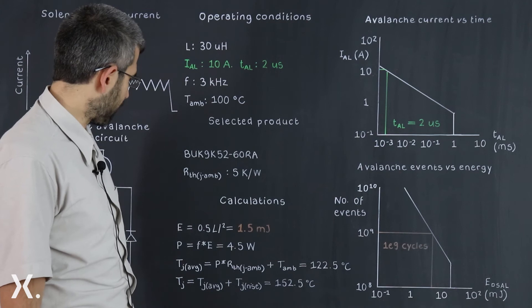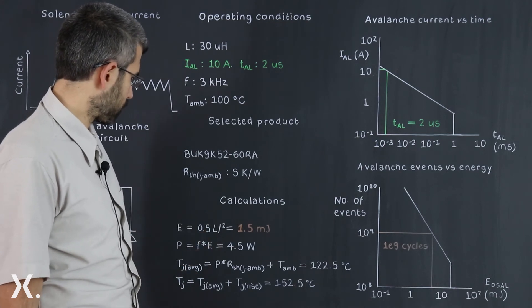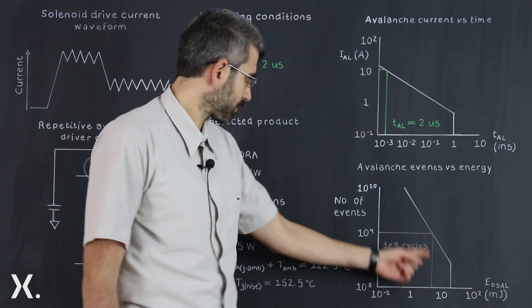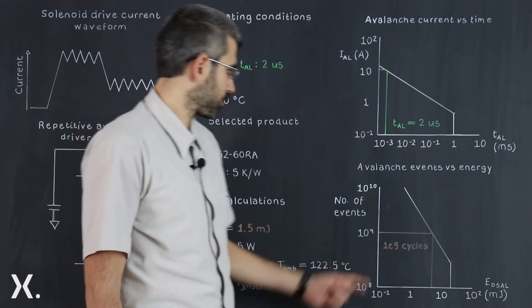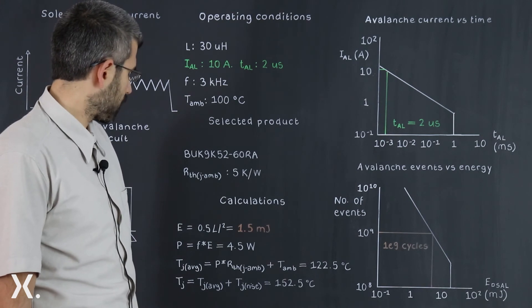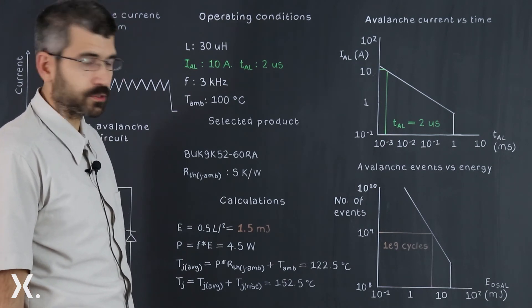Next we calculate the energy that is built up in the inductor and we trace it through the second graph, and we come to a number of repetitions of about 1 billion to last for the lifetime of the switch.